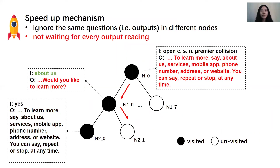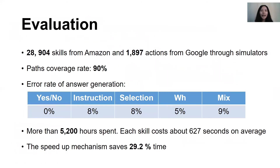Second, we do not wait for every output to be re-read. For example, when exploring the second path from N0 to N21, the output in N0 and N10 has already been stored. So Skill Explorer can directly utilize the stored input to answer the output without waiting for it to be re-read. As for evaluation, Skill Explorer analyzed nearly 30,000 skills from the market using their simulator, and its path coverage rate is about 90%. Yes-no questions had the best performance, while the error rates of other types are all less than 10%. The whole exploration time is more than 5,200 hours, with each skill costing about 10 minutes on average. The speed-up mechanism helped save 29.2% of the total time.